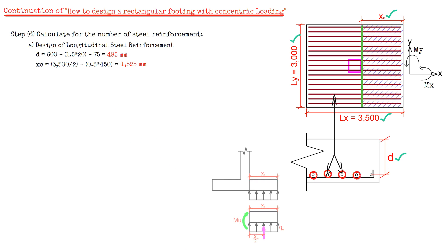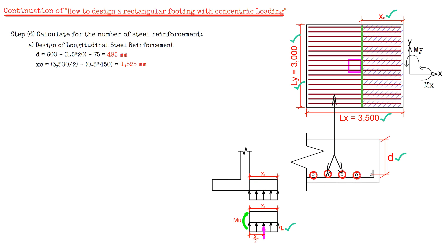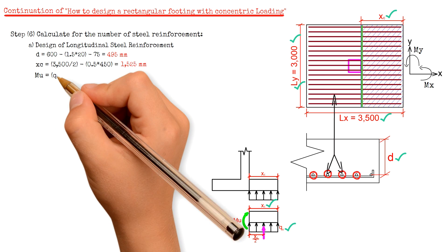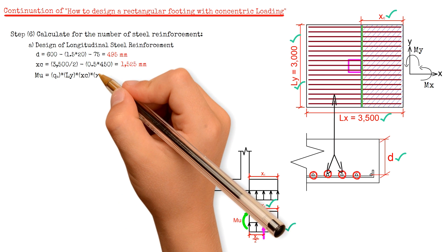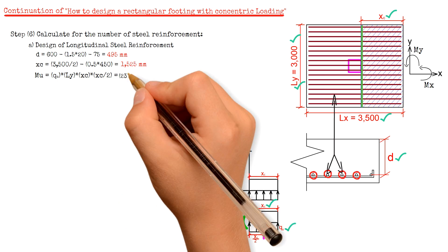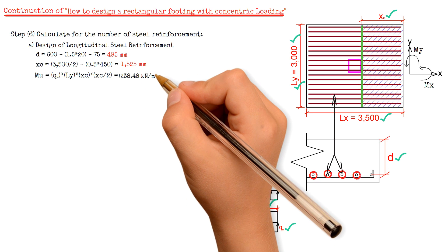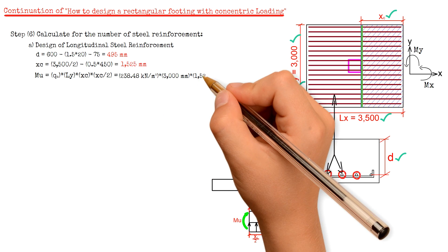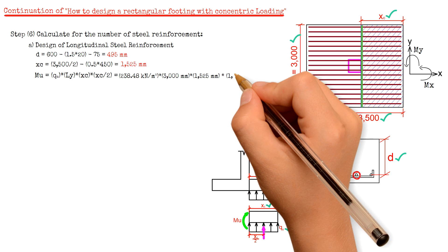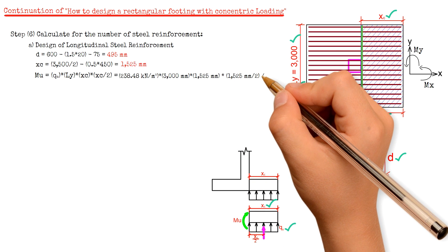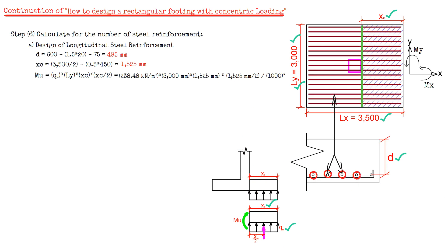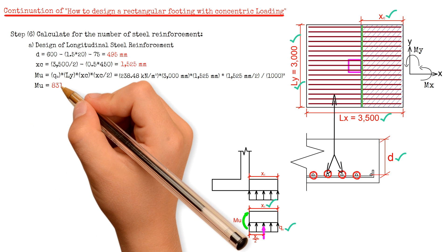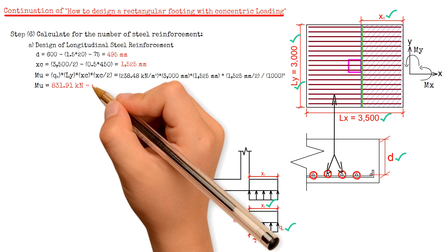Next is to calculate for the moment MU, which equals the net upward pressure QU, times the width LY, times the square of X sub C, divided by 2. We have 238.48 kN per square meter, multiplied by the width 3000 mm, multiplied by the square of 1525 mm, divided by 2, divided by 1000 to the power of 3. The result is 831.91 kNm.